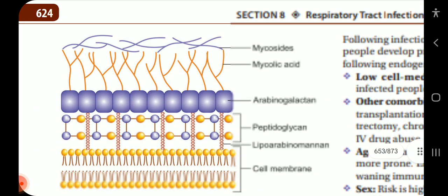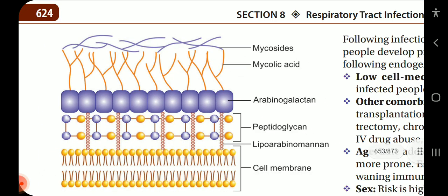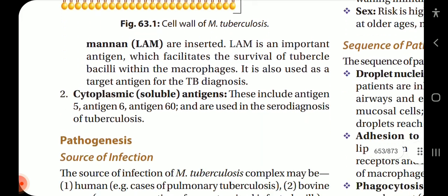In this figure, we can see from outside to inside: the mycolates, the mycolic acid layer, arabinogalactan, peptidoglycan, lipoarabinomannan, and then the cell membrane.